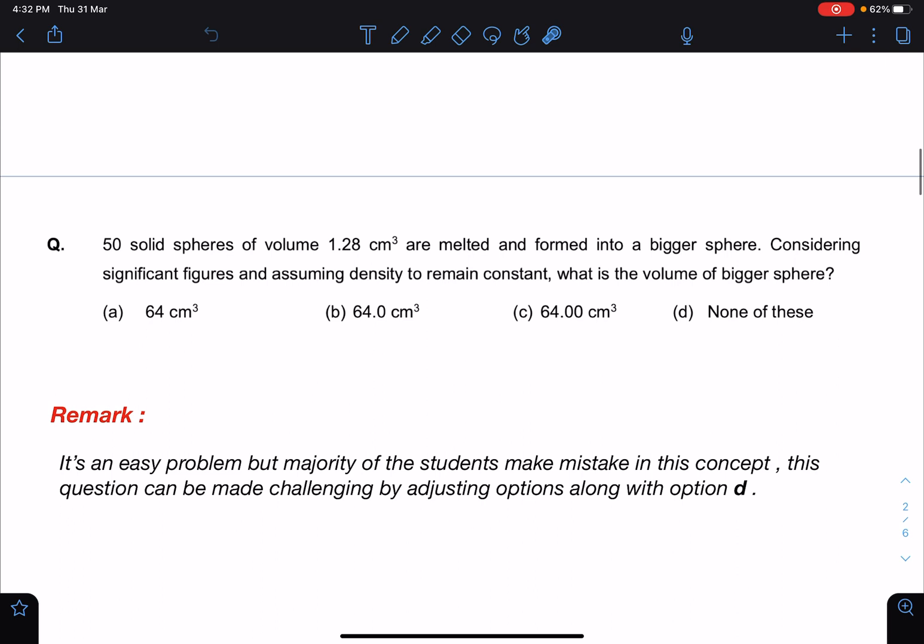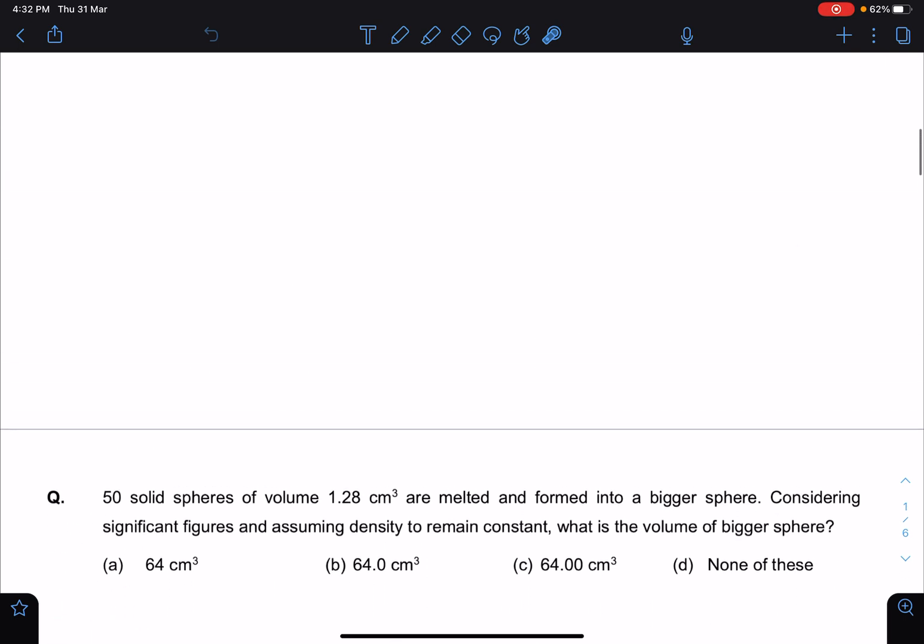50 solid spheres of volume 1.28 centimeter cube are melted and formed into a bigger sphere. Considering significant figures and assuming density to remain constant, what is the volume of bigger sphere? So you can see here the options are quite confusing.